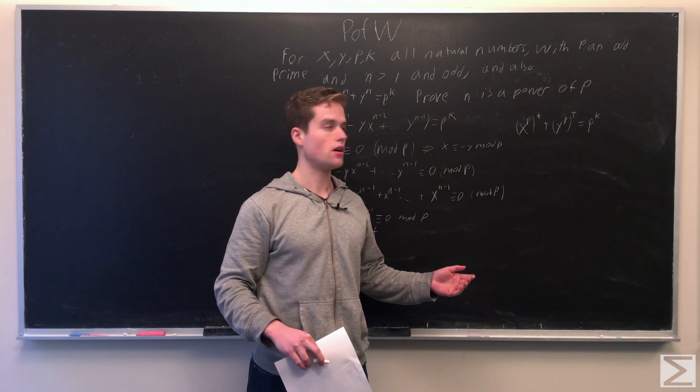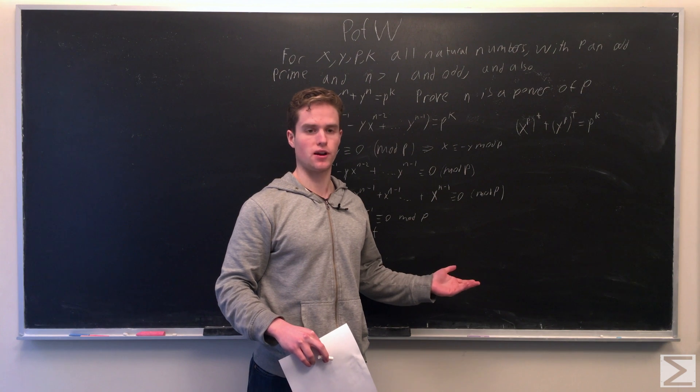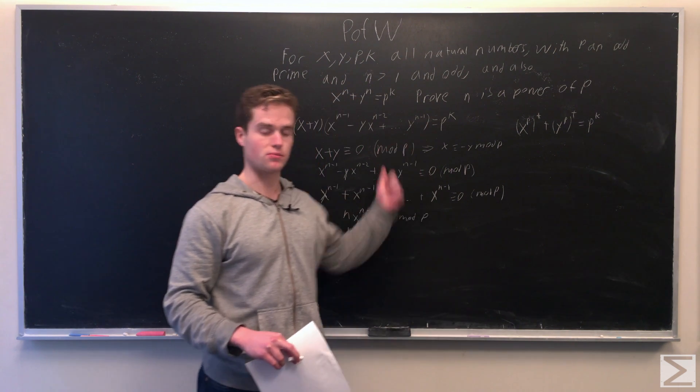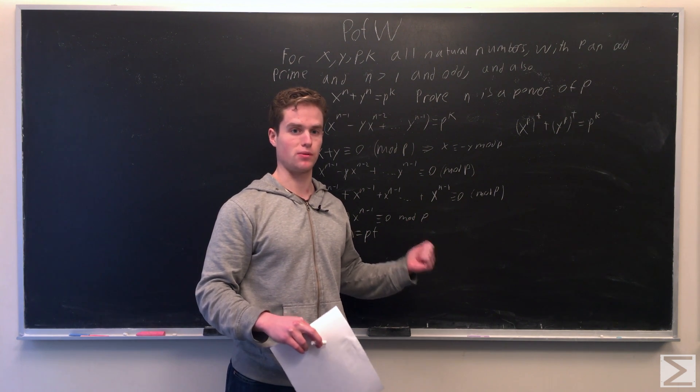So we can say x to the p is kind of a new x, call it x prime. y to the p is a new y, call it y prime. And we can repeat this procedure with t and conclude that t must be divisible by p as well.